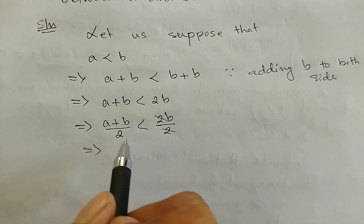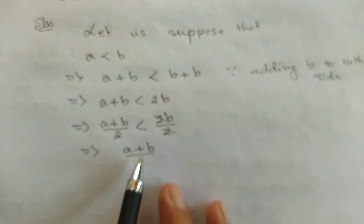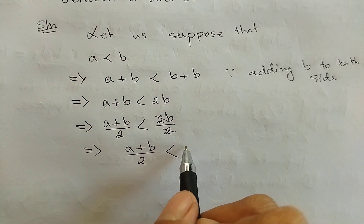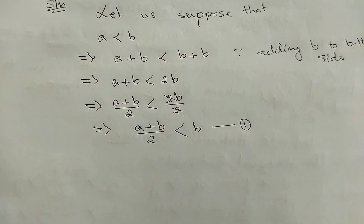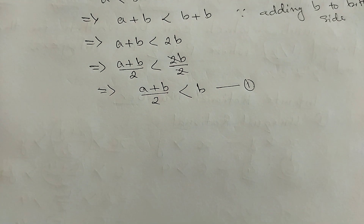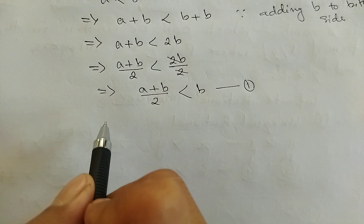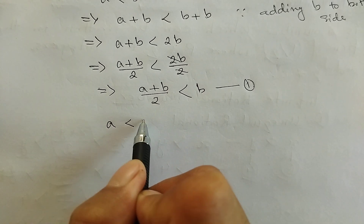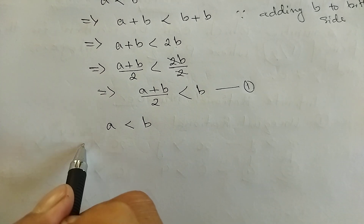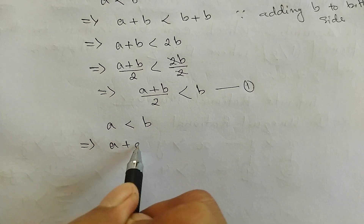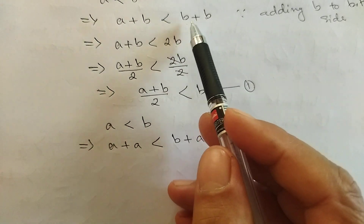This means a plus b divided by 2. We have a plus b divided by 2. This is equation number 1.